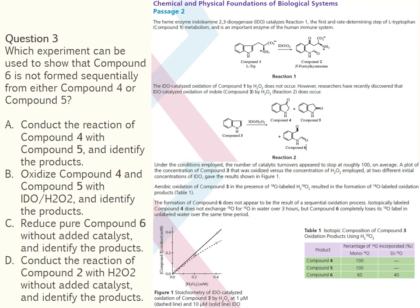The next question reads: 'Which experiment can be used to show that compound 6 is not formed sequentially from either compound 4 or compound 5?' The correct answer is B. This question requires applying knowledge about how enzymes catalyze reactions to the design of an experiment. Since enzymes are not used up during catalysis, any experiment including just compound 4 or just compound 5 would determine if either is a substrate for IDO-catalyzed conversion to compound 6. Having both compounds in solution with IDO adds unnecessary complexity, and examining IDO-catalyzed reduction of compound 6 would not give the necessary direct evidence.